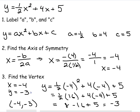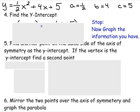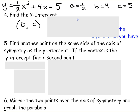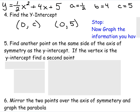Once we find the vertex, the next thing we look for is the y-intercept. With y equals one-half x squared plus 4x plus 5, a, b, and c are still there. The y-intercept is always in the format of 0, c — so in this case it's 0 and 5.